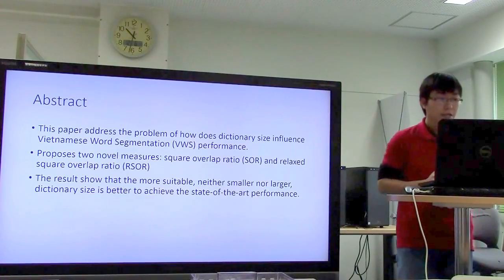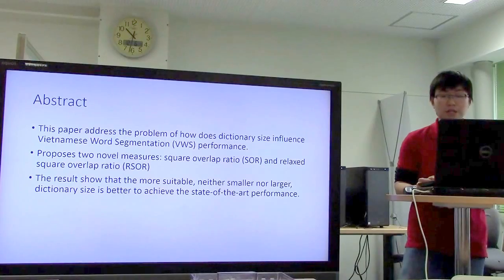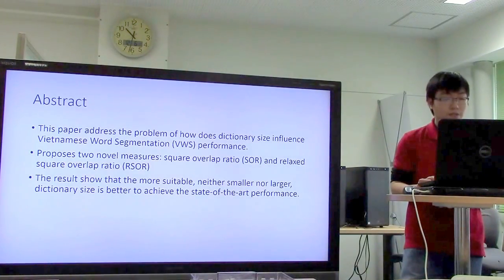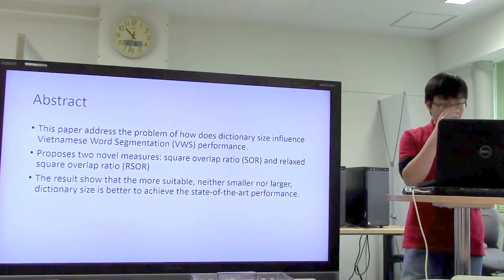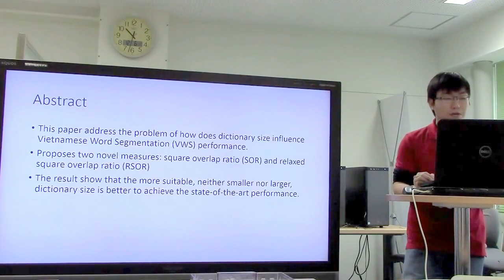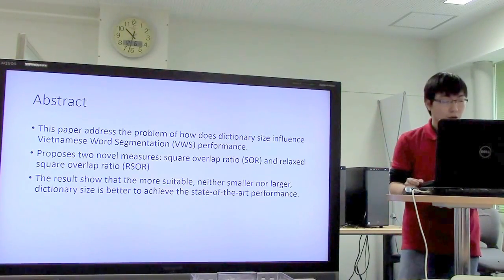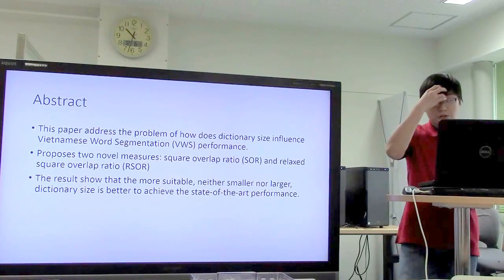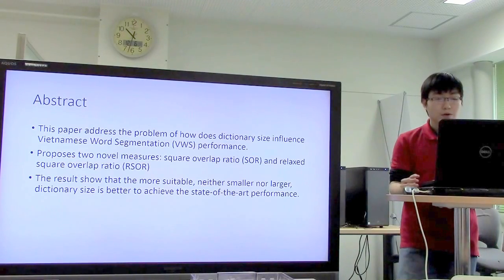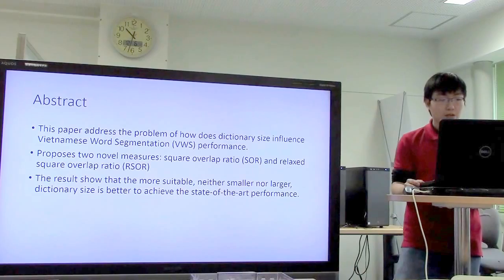The paper is named 'How the Dictionary Size Improves Performance of Vietnamese Word Segmentation.' In the abstract, this paper addresses the problem of how dictionary size improves Vietnamese word segmentation performance, and provides two novel dimensions: square overlap ratio and relaxed square overlap ratio, so that a more suitable dictionary size can achieve state-of-the-art performance.